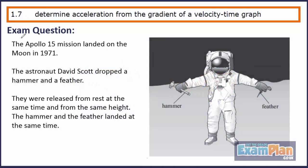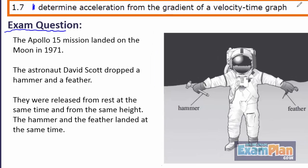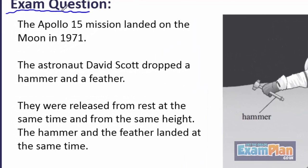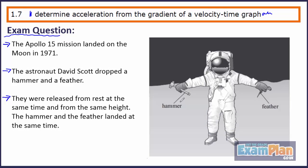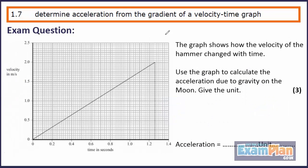Here is a practice exam question for determining the acceleration from a velocity-time graph. The Apollo 15 mission landed on the moon in 1971. The astronaut David Scott dropped a hammer and a feather. They were released from rest at the same time and from the same height, and the hammer and the feather landed at the same time. The graph shows how the velocity of the hammer changed with time.